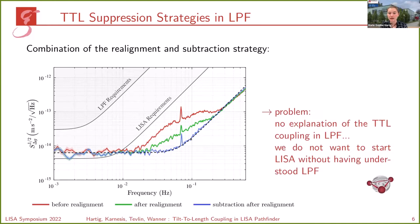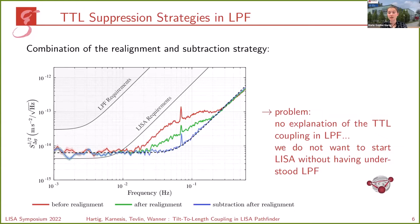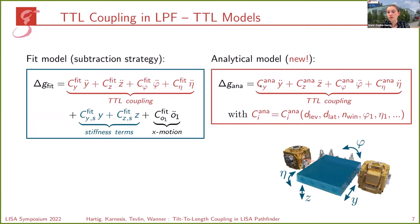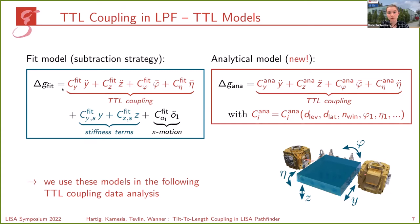With that, tilt-to-length coupling was nicely subtracted from the data during the mission. However, until the end of the mission there was no real explanation of that coupling — it wasn't understood why the realignment did not work as well as expected. Such an explanation would also be necessary to validate the suppression strategies planned for LISA. That's why we set up a new analytical model where all the coupling coefficients depend on the setup of LISA Pathfinder and also the alignment of the test masses.